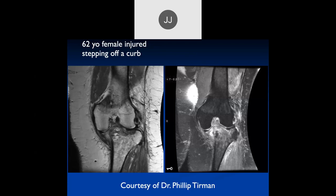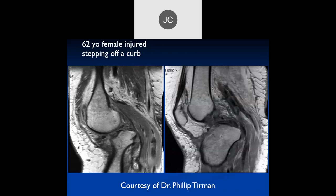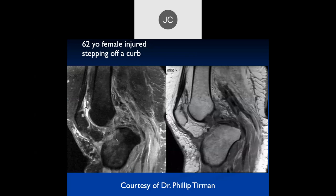We have a 62-year-old female who was injured after stepping off a curb. It looks like there's medial subluxation of the tibia with respect to the femur and extensive bone marrow edema. This is probably the ACL proximal origin, this is probably the popliteal tendon - so this is probably lateral and probably medial. There's obviously a dislocation here with instability. You need both ACL and PCL tears as well as collateral ligament tears - all from stepping off a curb. You can see the impaction injury to the tibia here.